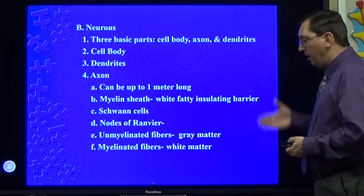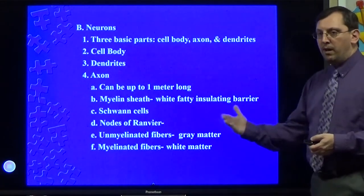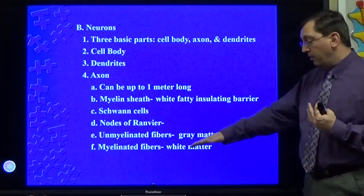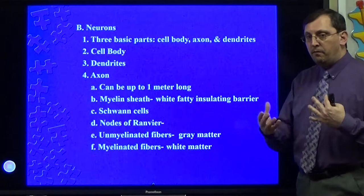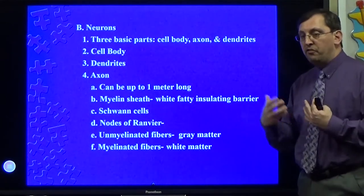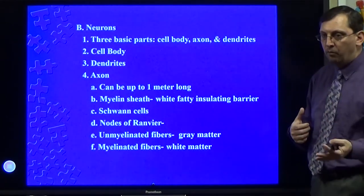The myelinated fibers are going to be white. So you have gray matter and white matter. One's insulated, one's not. They have different functions, different features to how they work for speed and for signal strength.